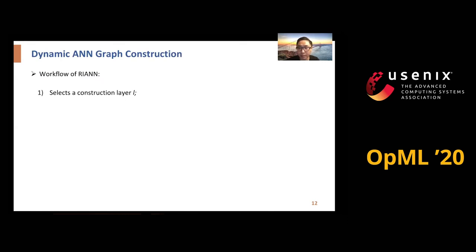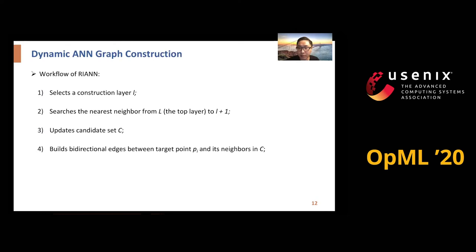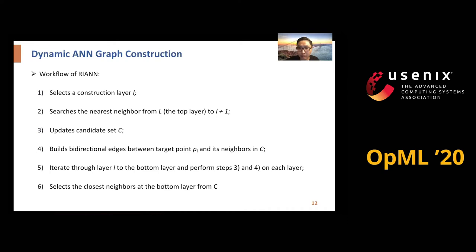Given a query point, the algorithm first selects a construction layer by a unified function. Second, the algorithm searches the nearest point to the target point with an ANN search function from the top layer to one layer above the construction layer. Next, the algorithm updates the candidate set and builds bidirectional edges between the target point and its neighbors in the candidate set. Steps 3 and 4 are processed iteratively through layer L to the bottom layer. Finally, the algorithm inspects the out-degree of the neighbor points and selects to prune out-neighbors if the out-degree exceeds the boundary constraint.